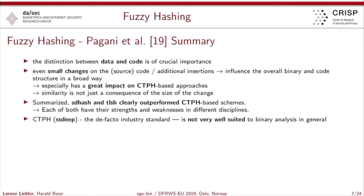To summarize his findings, one of the main findings is that the distinction between data and code is of crucial importance. Even small changes on the source code influence the overall binary and code structure in a very broad way. This especially impacts the usefulness of context-triggered piecewise hashing, where you extract sequences out of a given binary and compare them. Importantly, the similarity is not just a consequence of the size of the change.